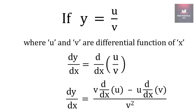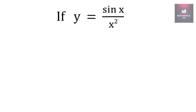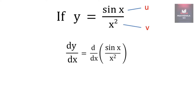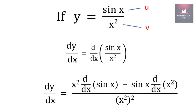Now let's understand this with the help of an example. Suppose y is sin(x) upon x square. Here sin(x) will become u and x square will become v. So if we take the derivative of y with respect to x, it will be d/dx of sin(x) upon x square. As per the u upon v rule, it will be v times the derivative of u minus u times the derivative of v, upon v square.